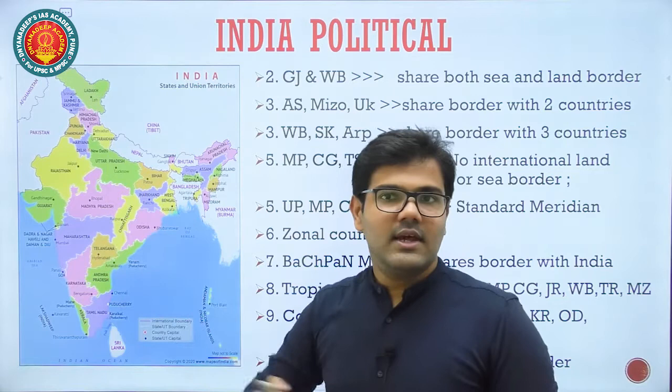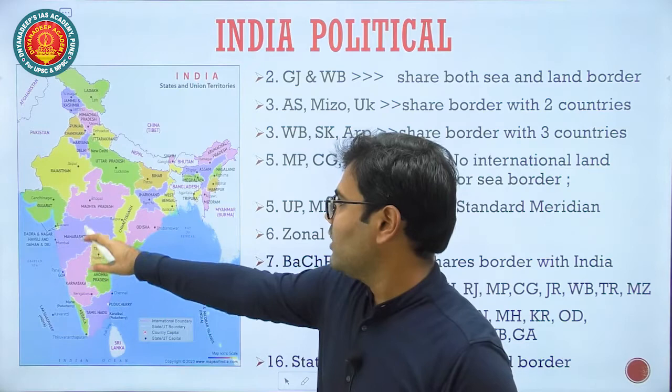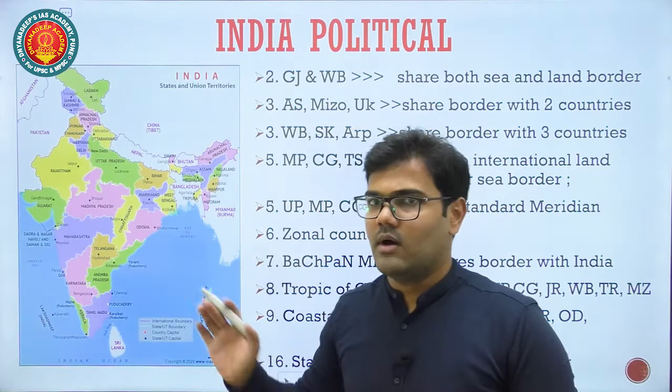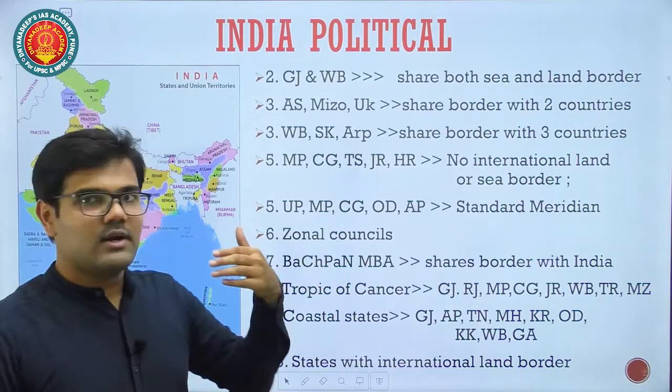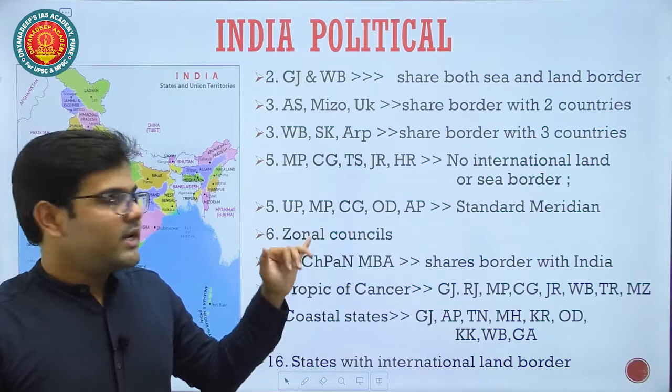UPSC will not directly ask how many states Madhya Pradesh shares borders with, but they can ask indirectly. For example, the standard meridian of India is 82°30' East — they will ask through how many states it passes. It passes through Uttar Pradesh, Madhya Pradesh, Chhattisgarh, Odisha, and Andhra Pradesh.